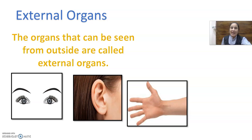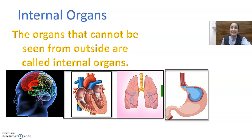In ko hum kya bolte hai — external organs — jinhe hum easily dekh sakte hai humari eyes se. And aise organs jo hume dikhaai nahi deethe hai, the organs which cannot be seen from outside, are called internal organs. Aise organs jo humari aankhon se hum nahi dekh sakte hai — jo outside humari body ka outer part jise eyes se sabhi dekh sakte hai. These are the external organs, but aise organs jo dikhaai nahi deethe hai, jo humari skin ki niche hote hai — humari skin humari chambri, humari body parts ko cover rakti hai to protect them.